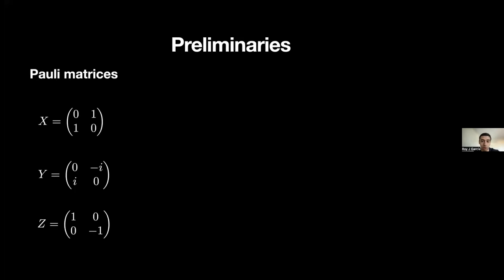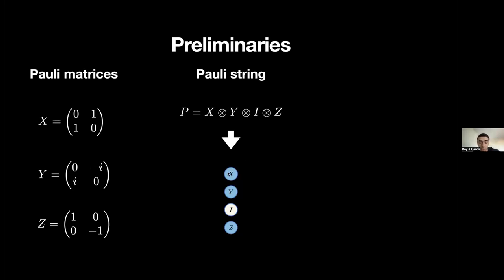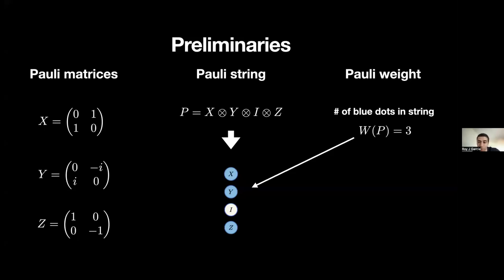We're going to be working a lot with Pauli matrices — these are just single qubit operations. We can combine these Pauli matrices in a tensor product to form a Pauli string. In this presentation, it's convenient to denote a Pauli string using a diagram: Pauli X acting on the first site, Pauli Y on the second, identity on the third, and Z on the last. Whenever we have an identity operator acting on a site we color it white, and whenever we have a non-identity operator it's blue.